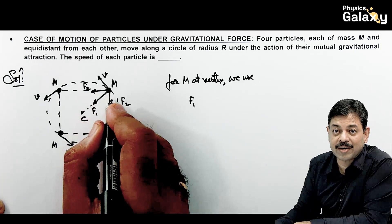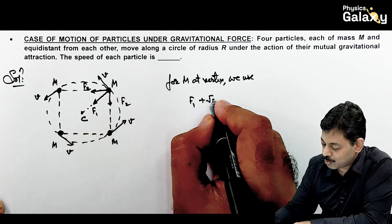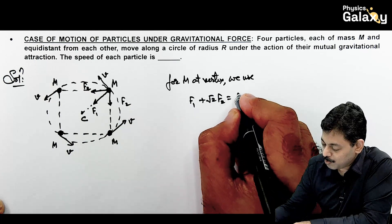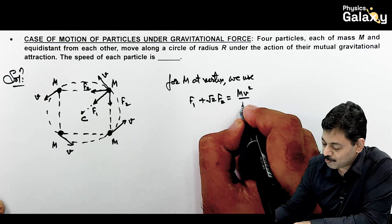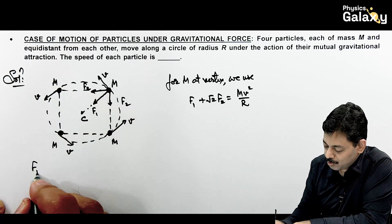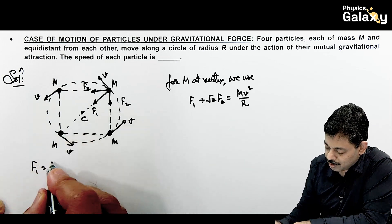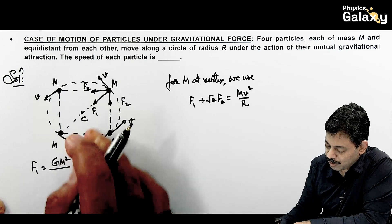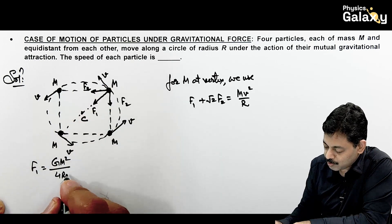So net gravitational force on this particle of mass m due to other masses will be the resultant of these three forces. The resultant of these three will be towards the center. Because of that force, this will be in circular motion. So we can write, for m at vertex, in this situation f1 is one force and two f2 are acting at right angle. So this will be f1 plus root 2 times f2 must be providing the necessary centripetal force mv squared by R for its circular motion.